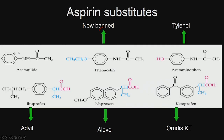Aspirin — there are different types such as phenacetin and Tylenol. All of them have different structural features. Ibuprofen, also called Advil. These modifications are done in structures to improve drug-likeness, improve ADME, make the molecule more stable, or reduce toxicity.